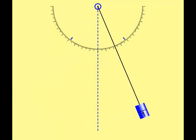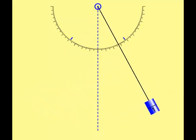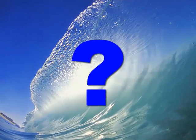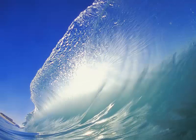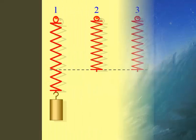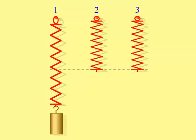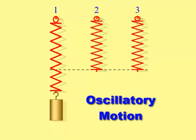Pendulums have regular back and forth motion, something they have in common with all waves. So what causes waves? Waves are caused by vibration. When something moves back and forth, the motion is called vibration or oscillatory motion.